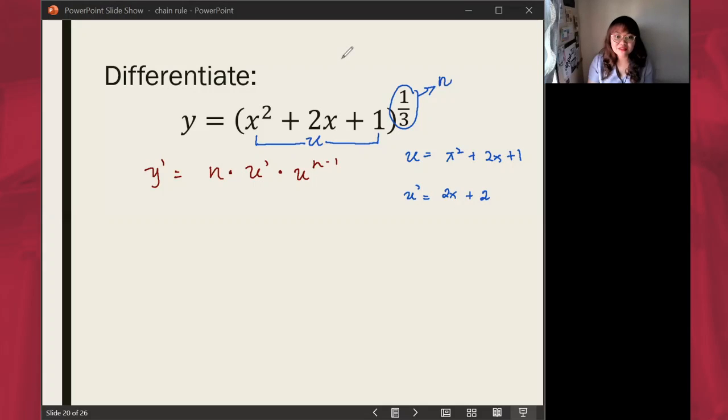Now that we have the parts, let's substitute. y' is equal to n which is one-third times u' which is 2x plus 2 times u, the original expression, x squared plus 2x plus 1 raised to one-third minus 1.